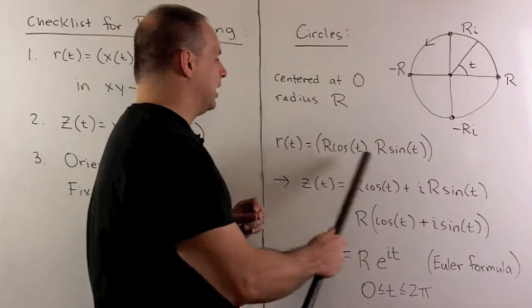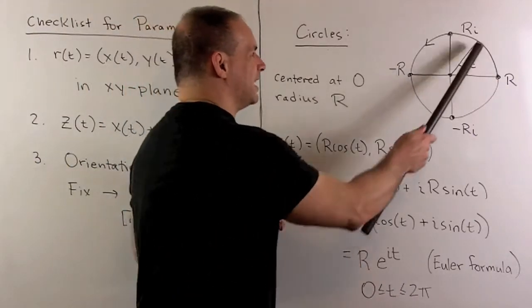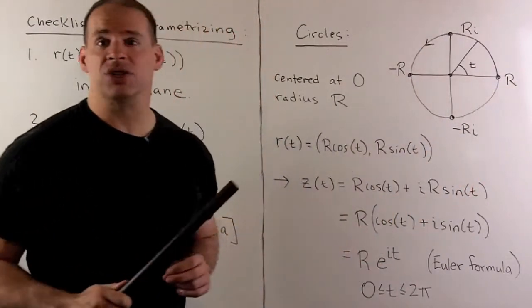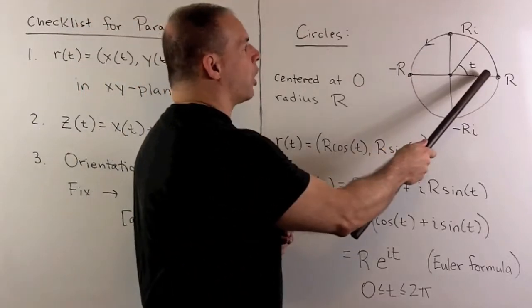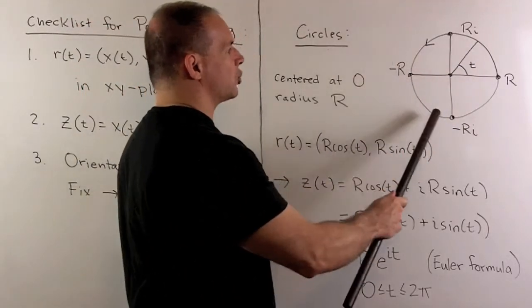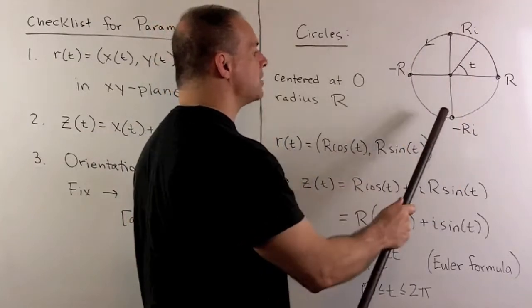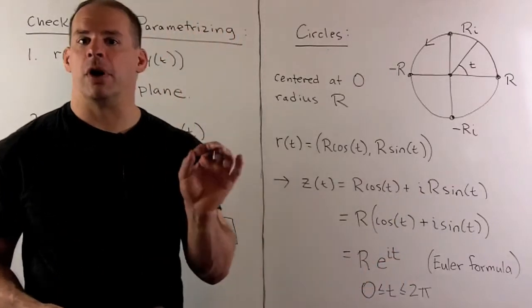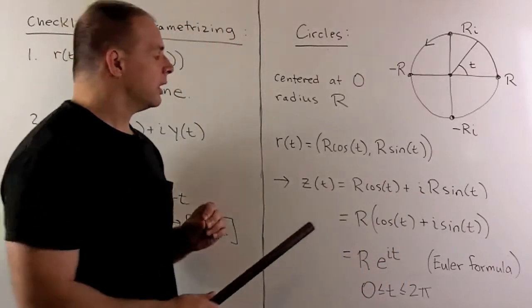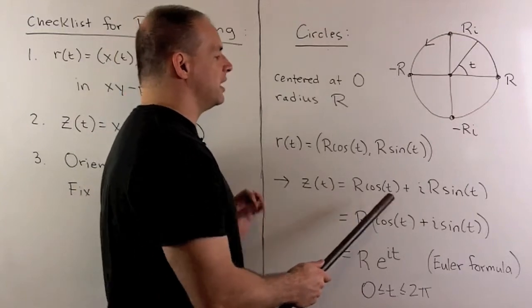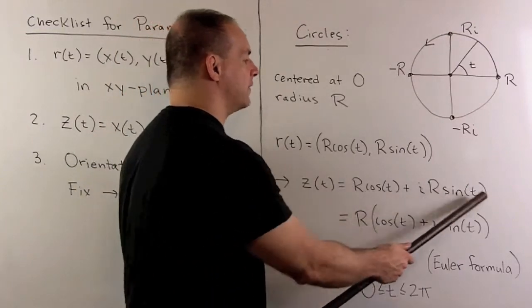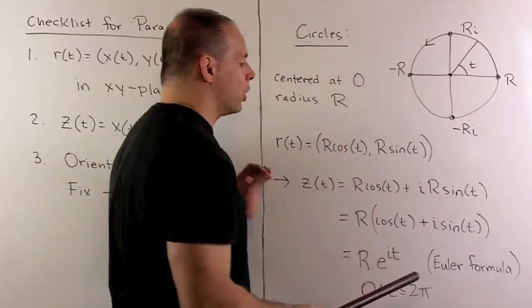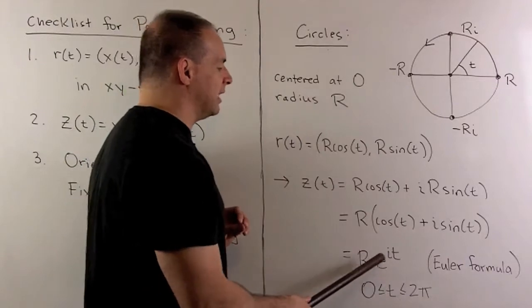Note what we're getting here. If I mark off t as the angle between our point and the positive x axis, or the real axis, then as I let t grow, the angles are going to start going in this direction, meaning our orientation is counterclockwise. If we convert to the complex plane, I'll have z of t equal to R cosine of t plus iR sine of t. We can factor out the R. And then with what's left over, we can use Euler's formula to convert that to R times e to the it.